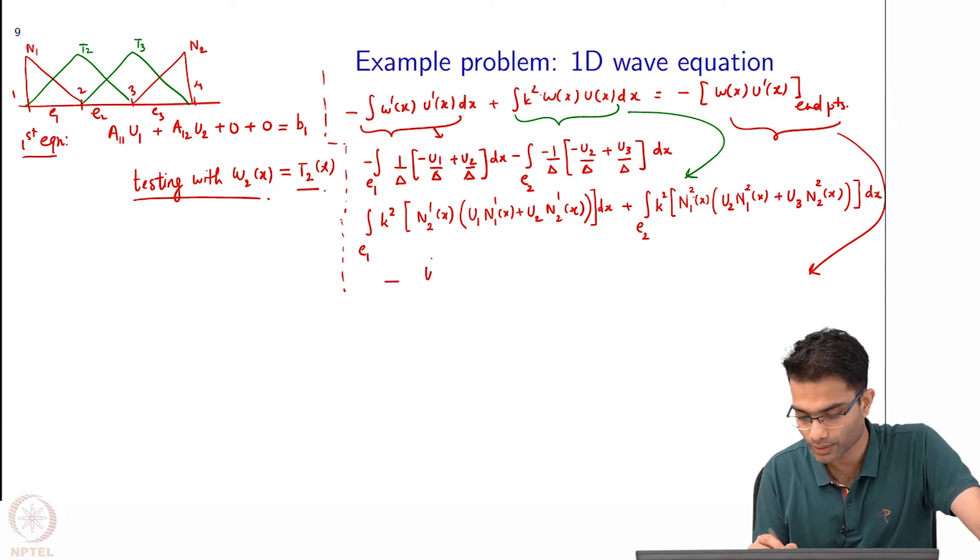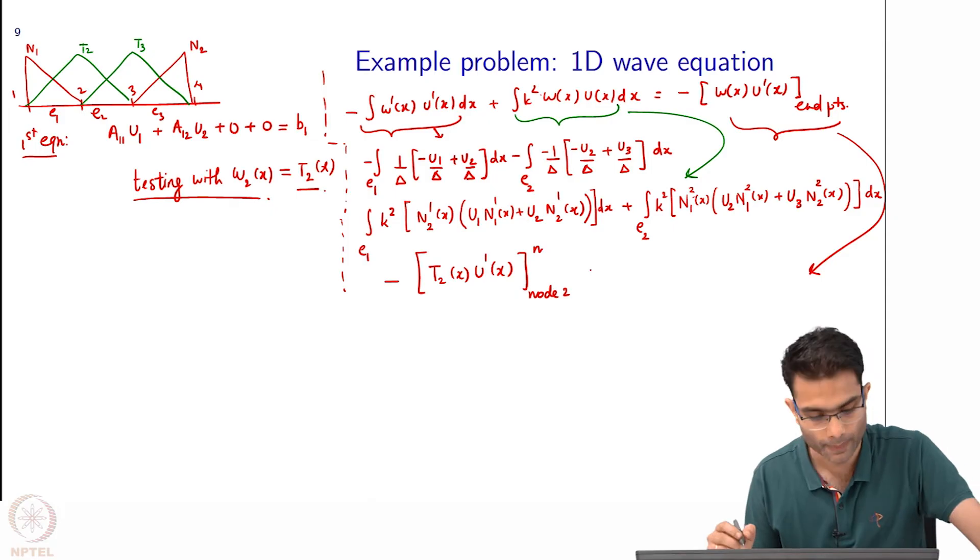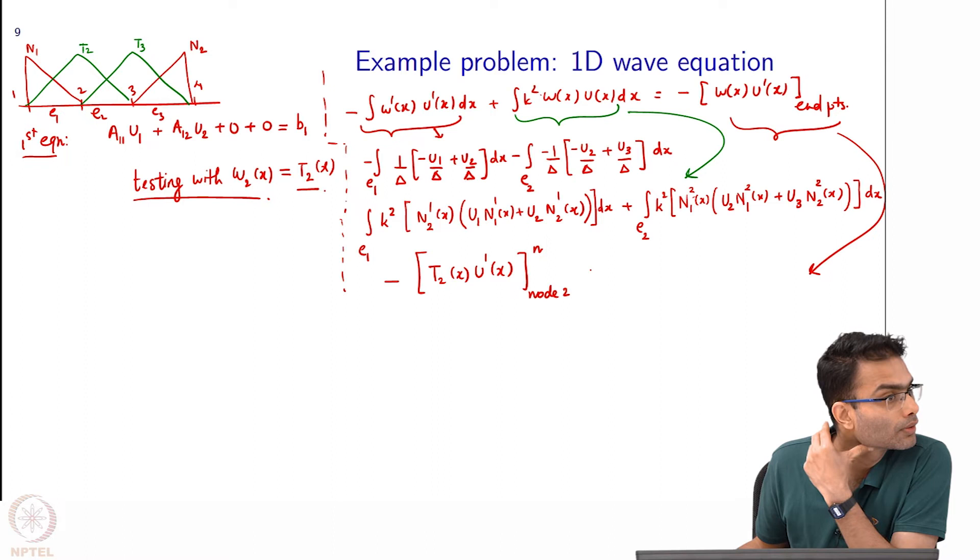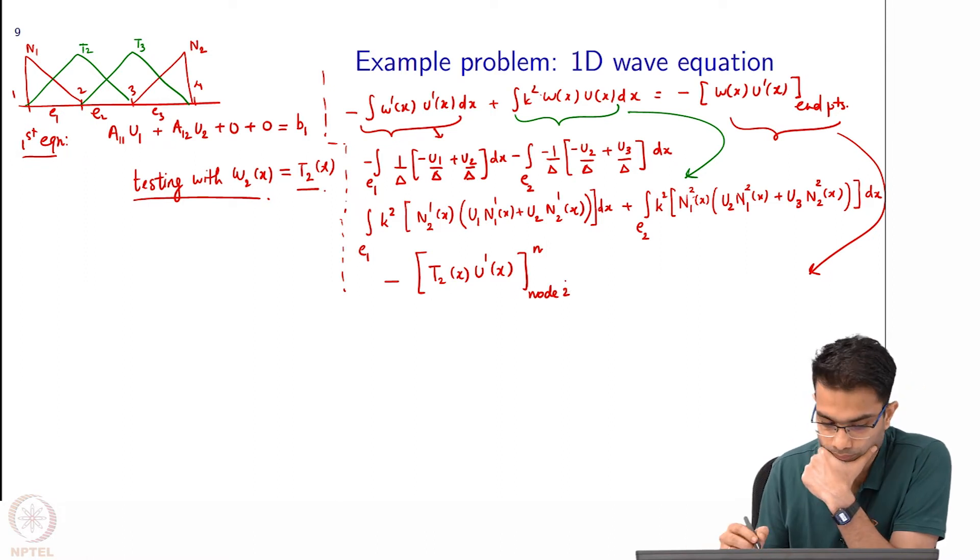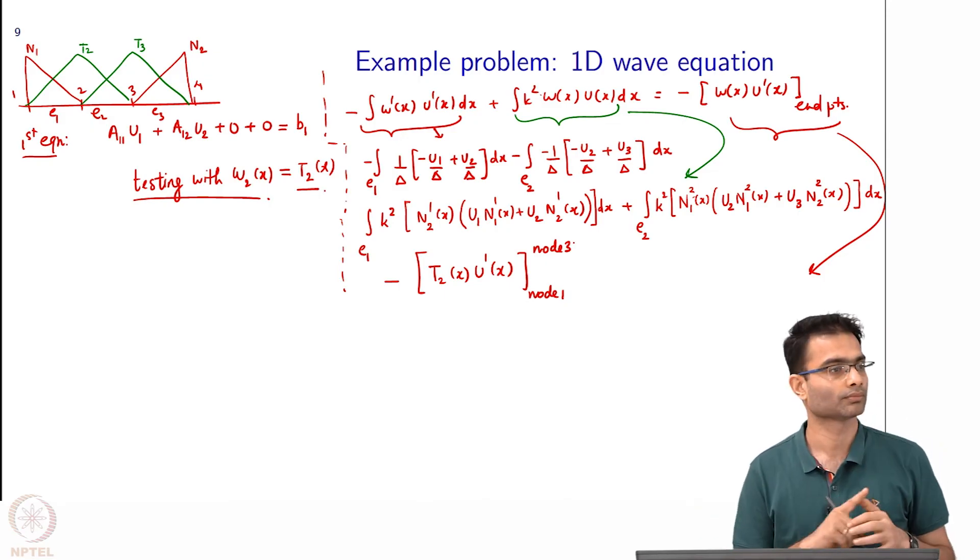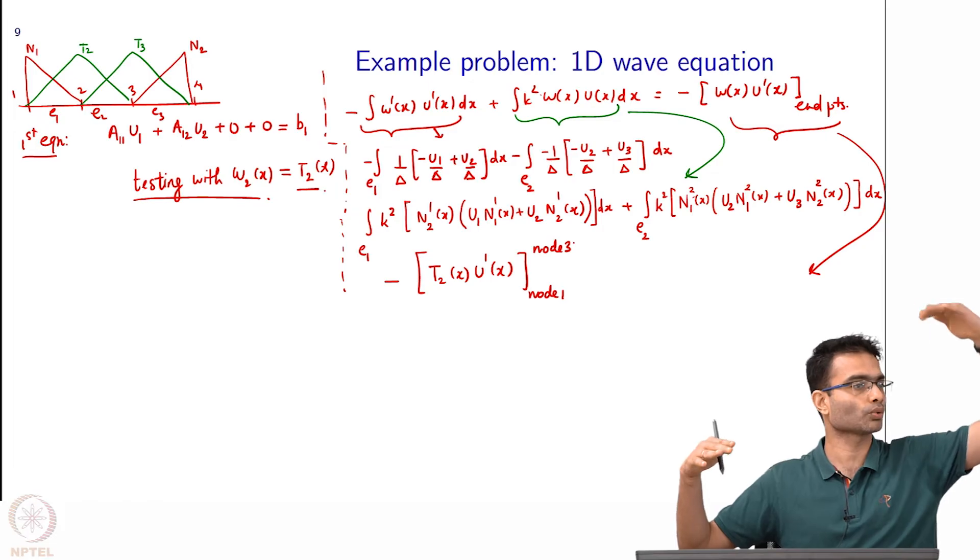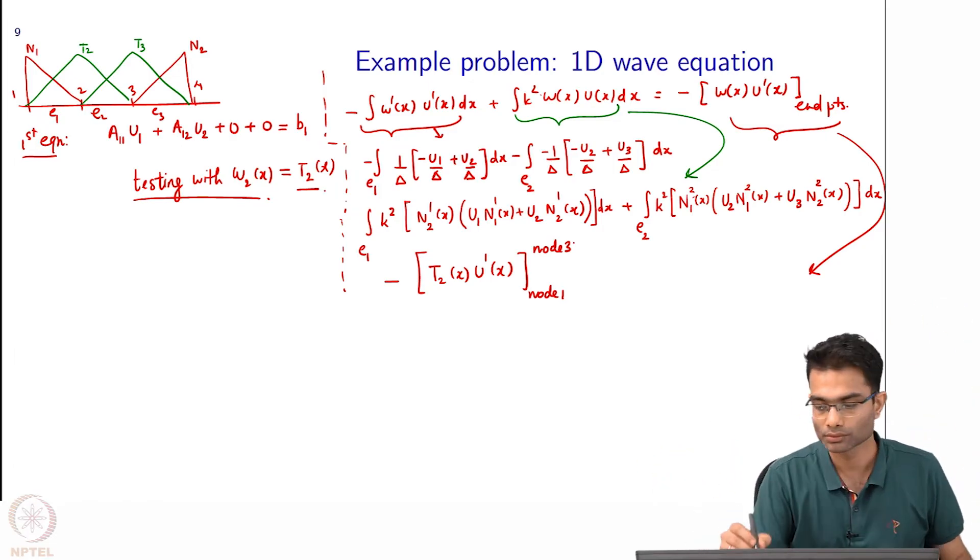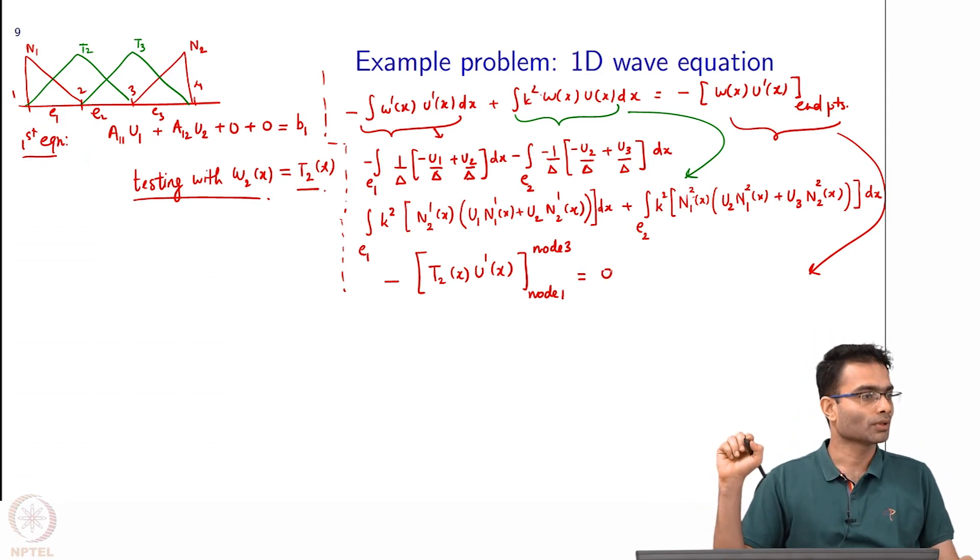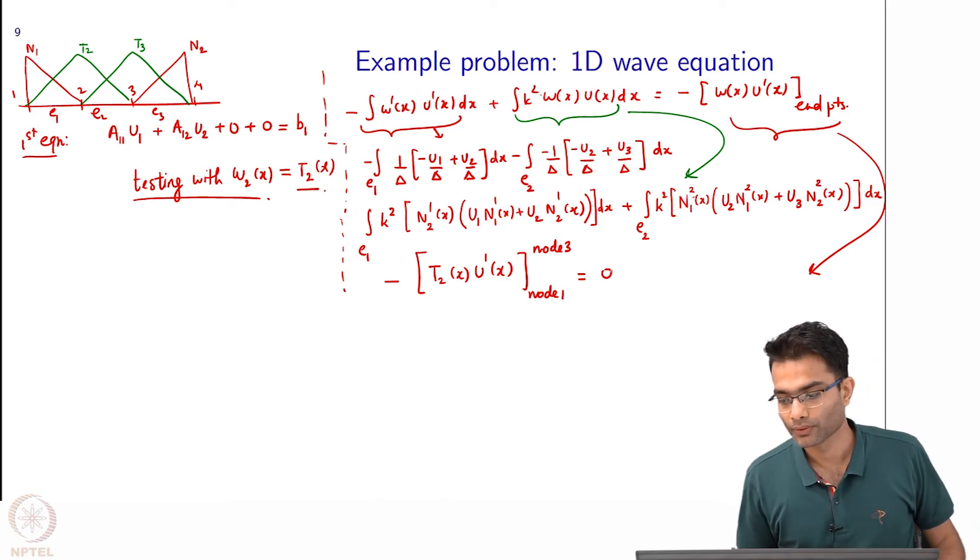Then this third term over here, it will be minus w of x u prime of x at node 2 minus node 1 minus node 3. This triangle, this green triangle is starting from node 1 going to node 2 and then going to 0 at node 3. At both the node points what is its value? 0. Very easy. You notice this right hand side term comes into play only at the end points because it gets cancelled like this. This is a clever choice of basis of testing function also.